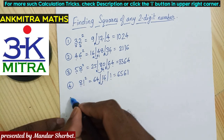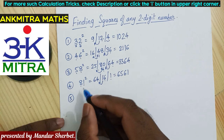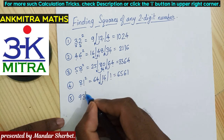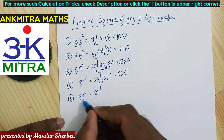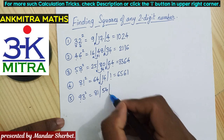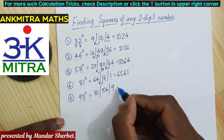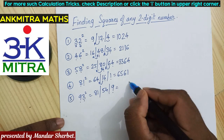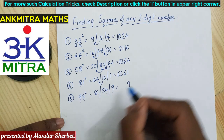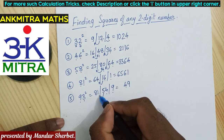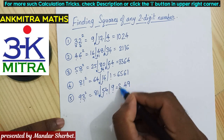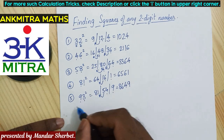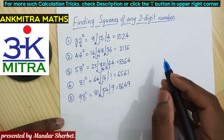Let's look at one more example: the square of 93. Start with the square of 9, which is 81. Multiply 9 by 3 to get 27 — double of 27 is 54. Square of 3 is 9. For the final answer, 9 goes to the units place. From 54, 4 goes to the next digit and 5 is carried. 81 plus 5 becomes 86. So 8649 is the exact square of 93.